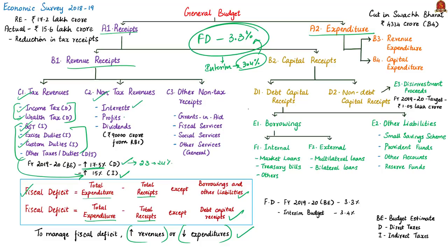The government also aims to increase revenue from non-tax revenues such as interest, profits, and dividends. The Finance Secretary said the government had budgeted a dividend from the Reserve Bank of India of about ₹90,000 crore. Under non-debt capital receipts, disinvestment proceeds — money earned by the government by withdrawing its investments from public units — will be targeted at ₹1,05,000 crore for financial year 2019-20. Coming to the expenditure side, the Finance Secretary said the amount budgeted is more or less the same as in the interim budget tabled in Parliament in February before elections.